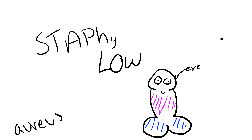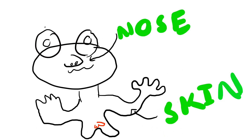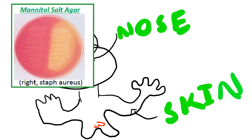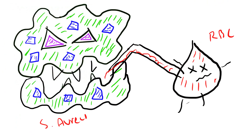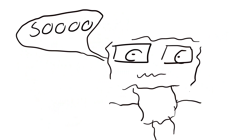Going back to Staph aureus, it's part of our normal flora. It's pretty much located everywhere on our surface, from our skin to our nose. It does produce acid from mannitol on a mannitol salt agar, and it is beta-hemolytic. That means it produces hemolysin, so it can lyse blood and absorb nutrients from it.